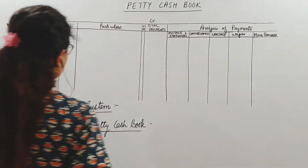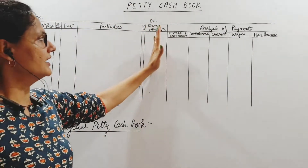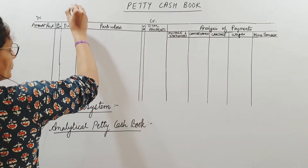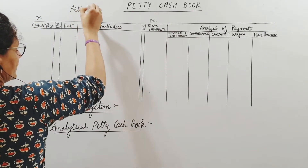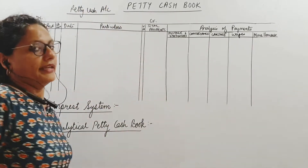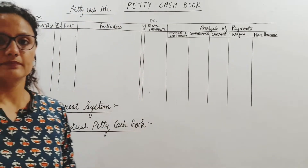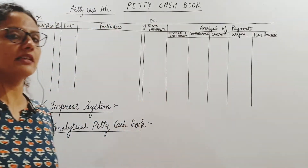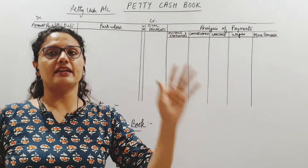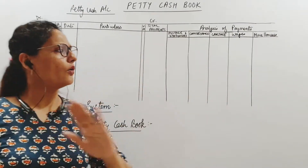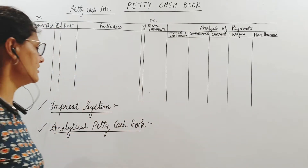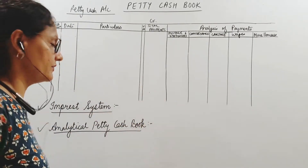It will have a debit side and a credit side, because the petty cash book also serves as a petty cash account. So we are not making a separate petty cash account in the ledger. From here itself you will be able to know how much was spent, how much is left at the end of the period — all information will come here in a systematic manner and it will reduce a lot of burden on the accountant.